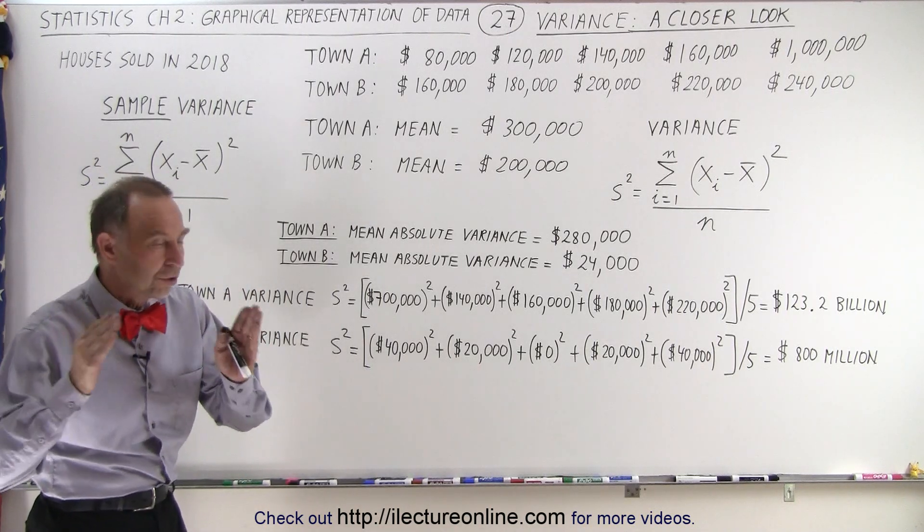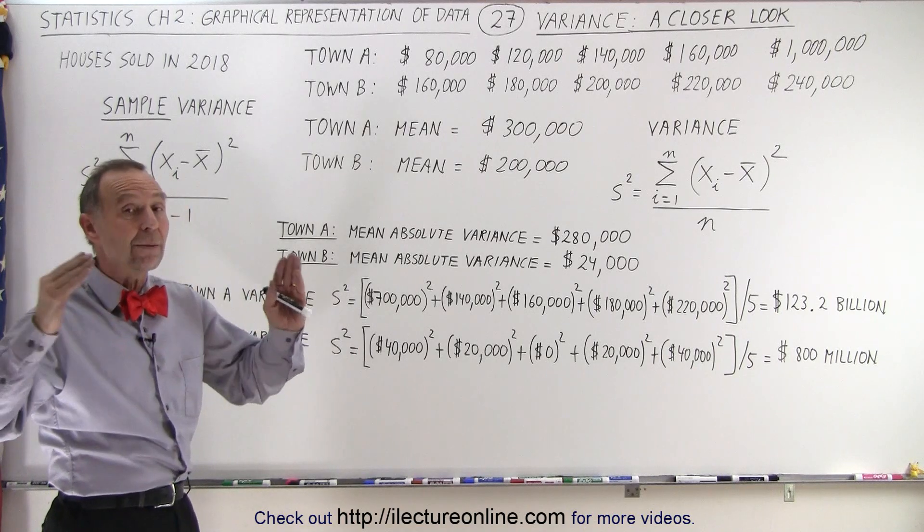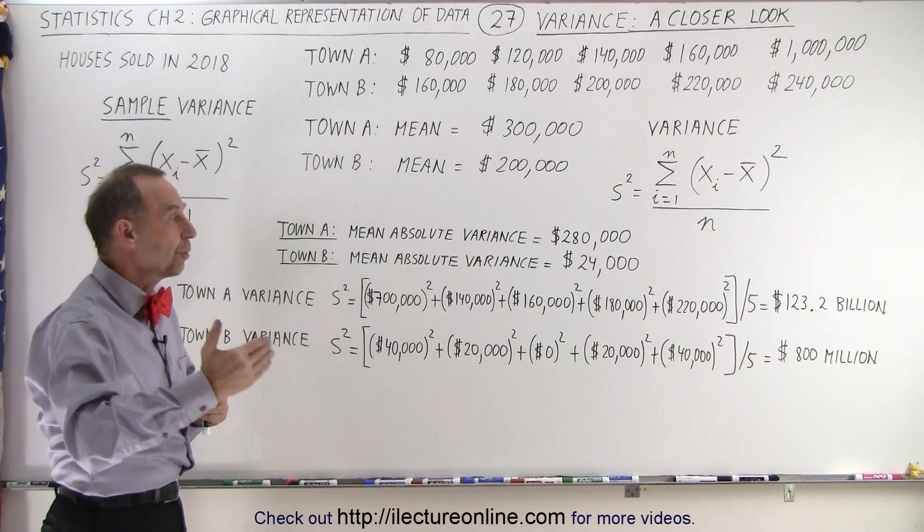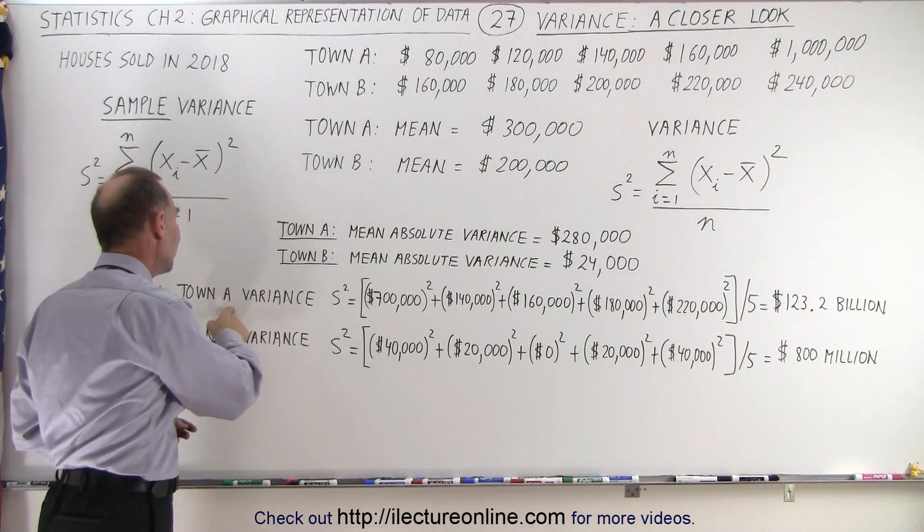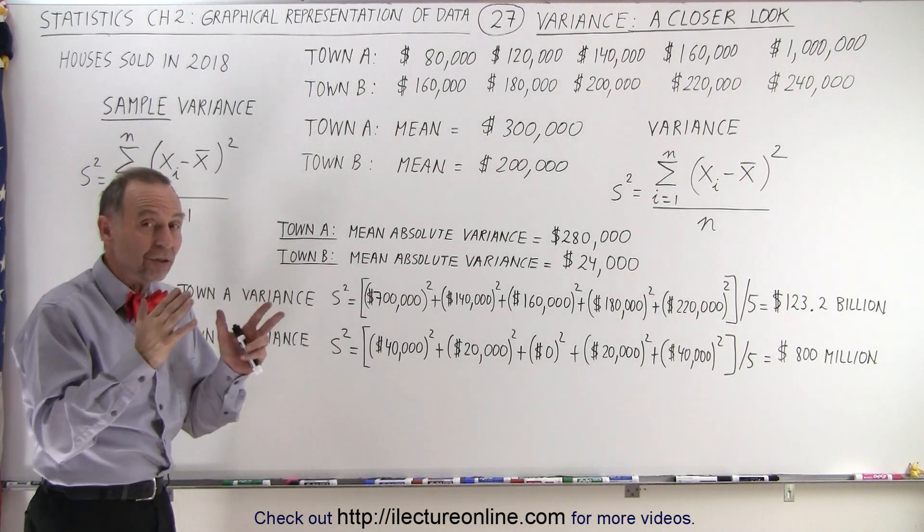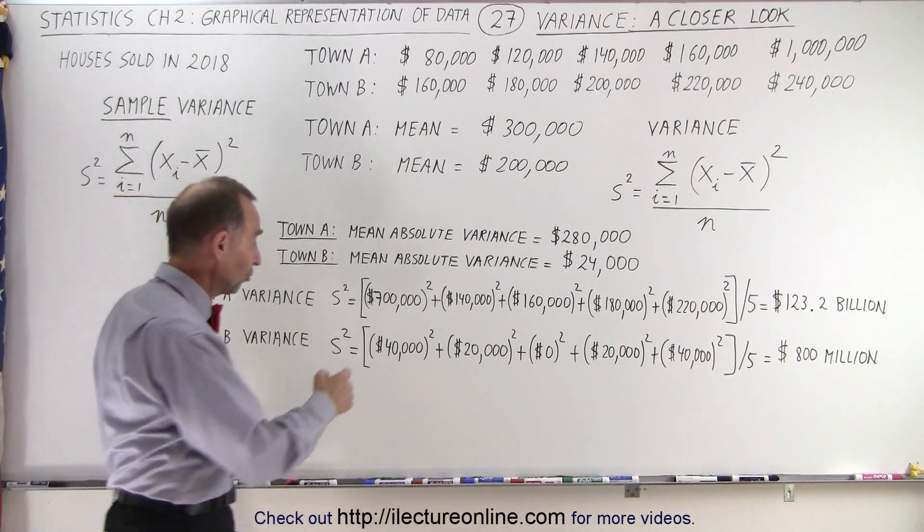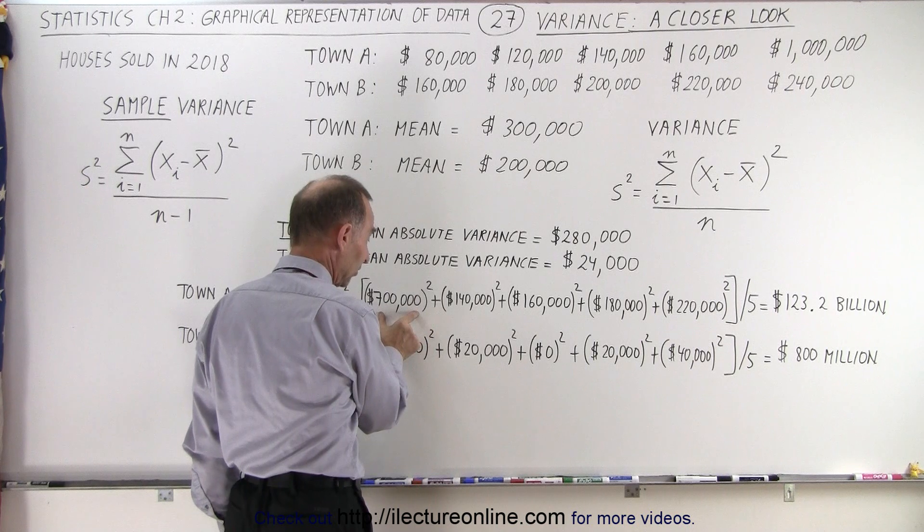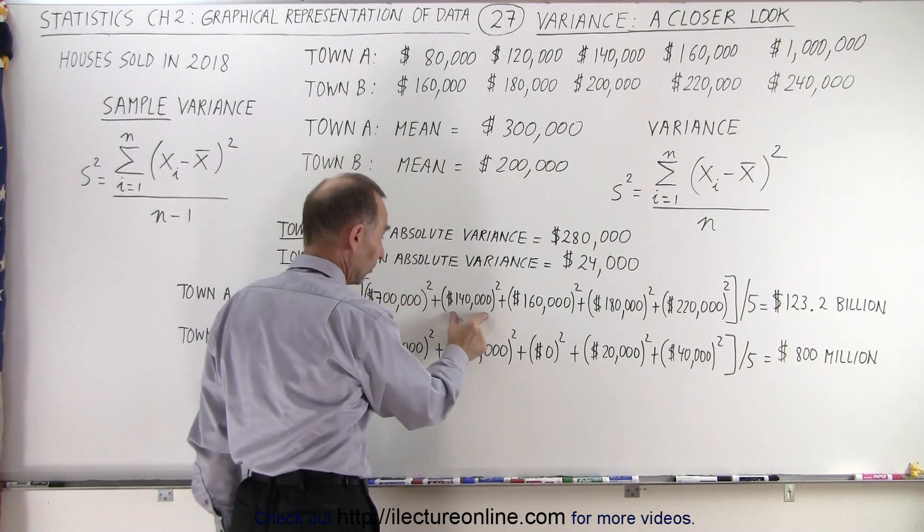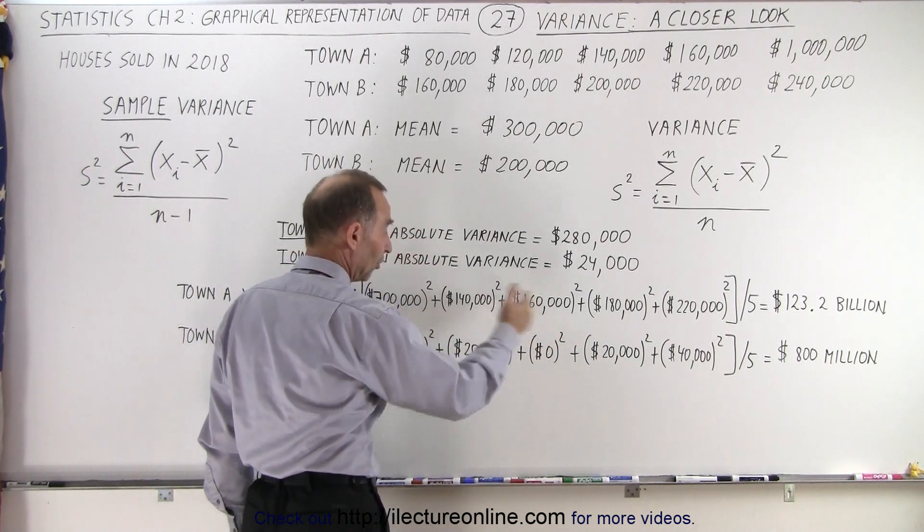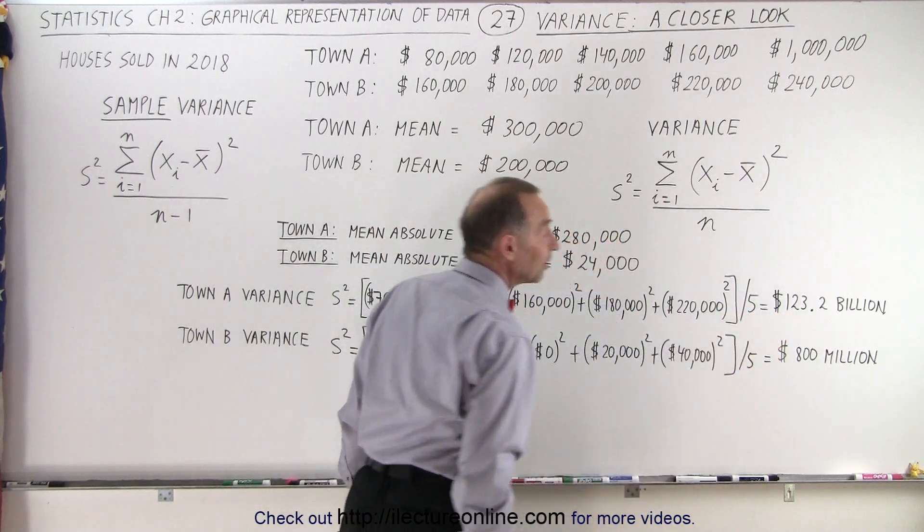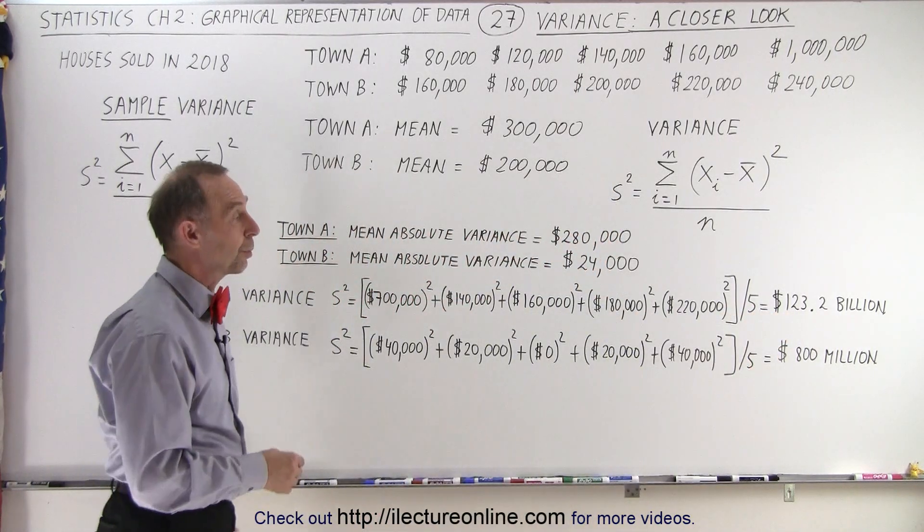Since we have to square the differences, you get some very big values, but it also increases the difference between what we get for town A versus town B when the variances are greater in town A. Notice when we square each of the differences between the average and the actual house prices, seven hundred thousand dollars, one hundred forty thousand, one hundred sixty thousand, those are large differences. We square them and then we divide by five, we get a very big number, a hundred and twenty three point two billion.